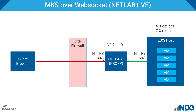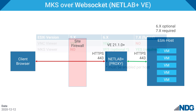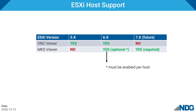At the core level, an MKS connection is made by the client browser running NetLab's built-in MKS Viewer, connecting to the NetLab server, which is a proxy running VE 21.1.0 or higher. On the back end, you have an ESX host running VMware 6 or VMware 7. It's important to point out that the VNC Viewer has not been removed from NetLab VE version 21 — it coexists side by side with the MKS Viewer. Which viewer is used will depend on the version of ESXi NetLab is connecting to and configuration options within the NetLab admin interface for the ESXi host.